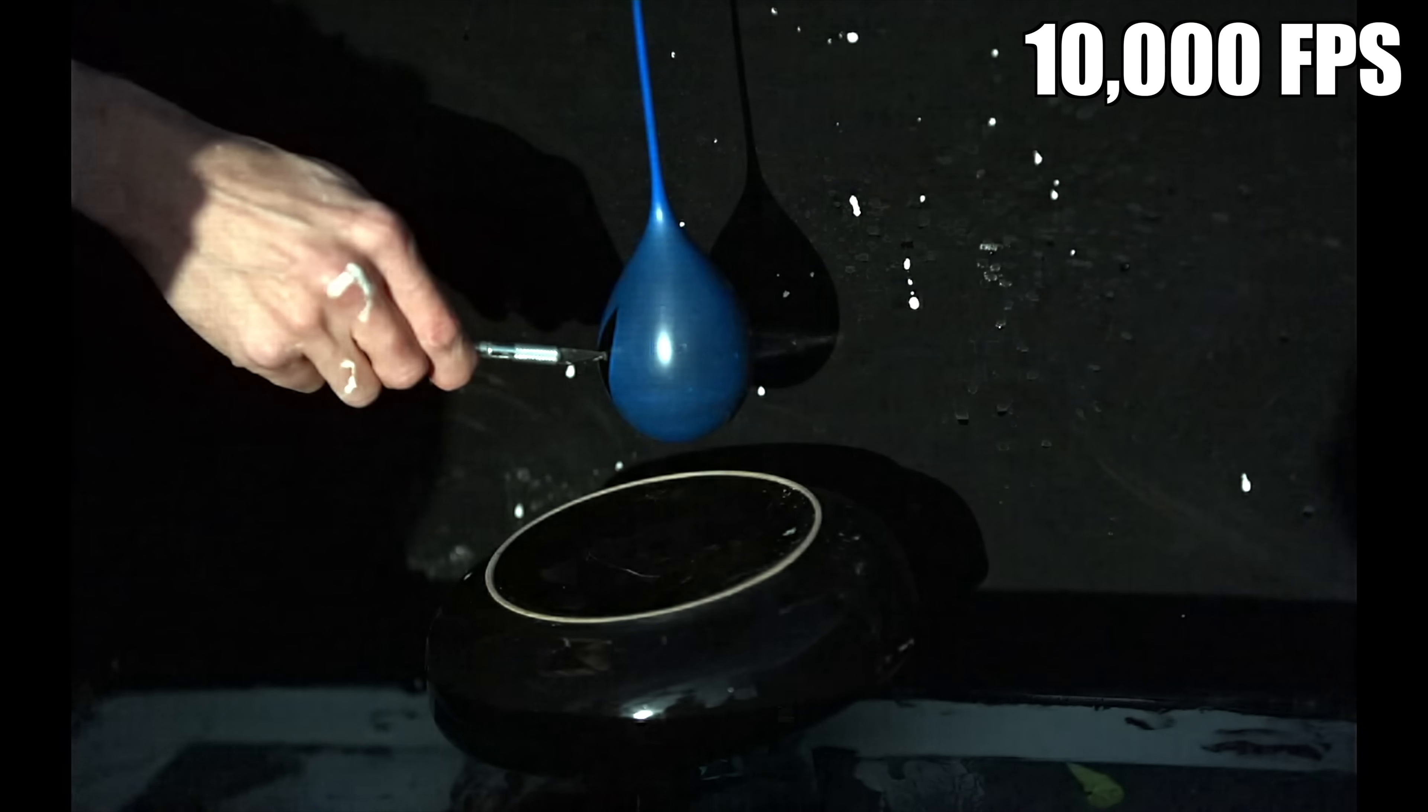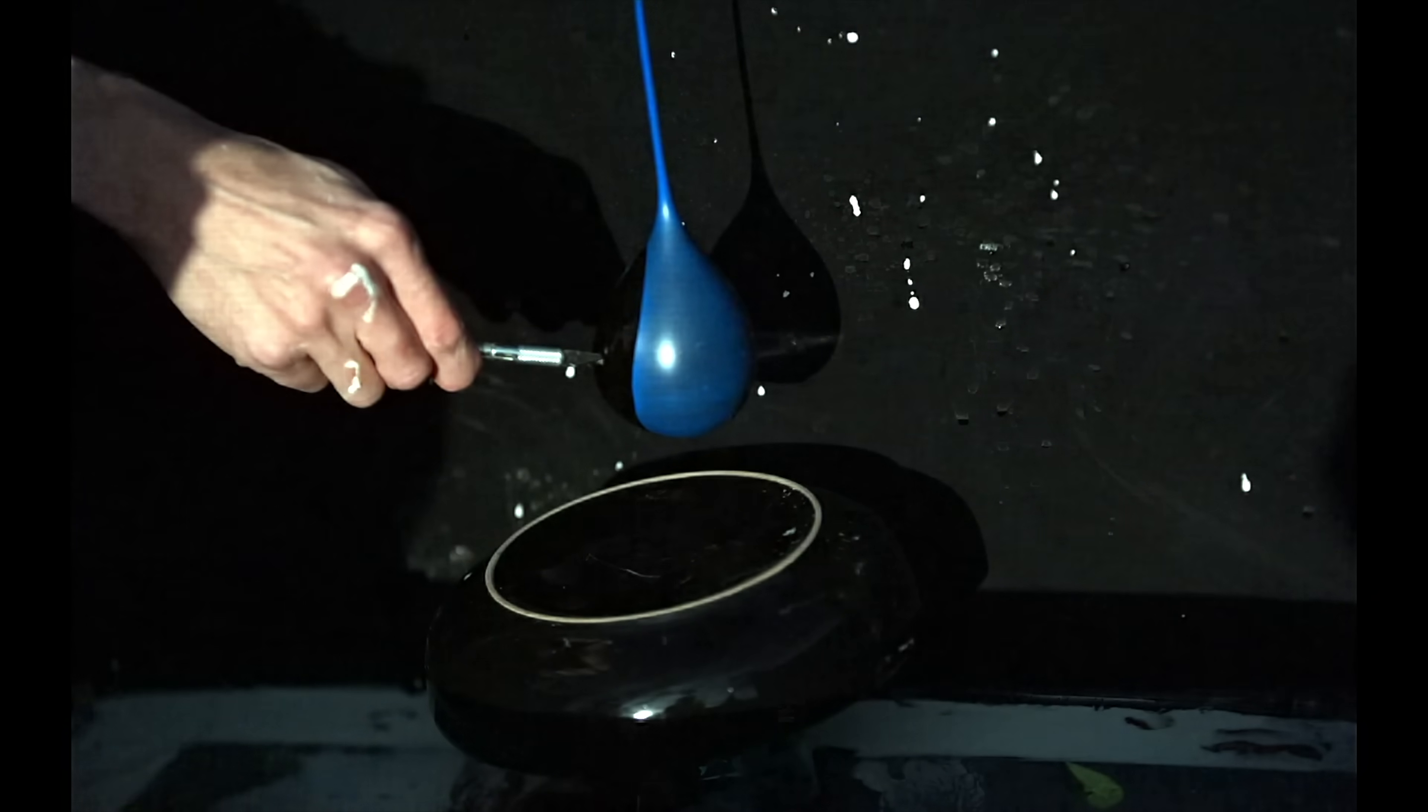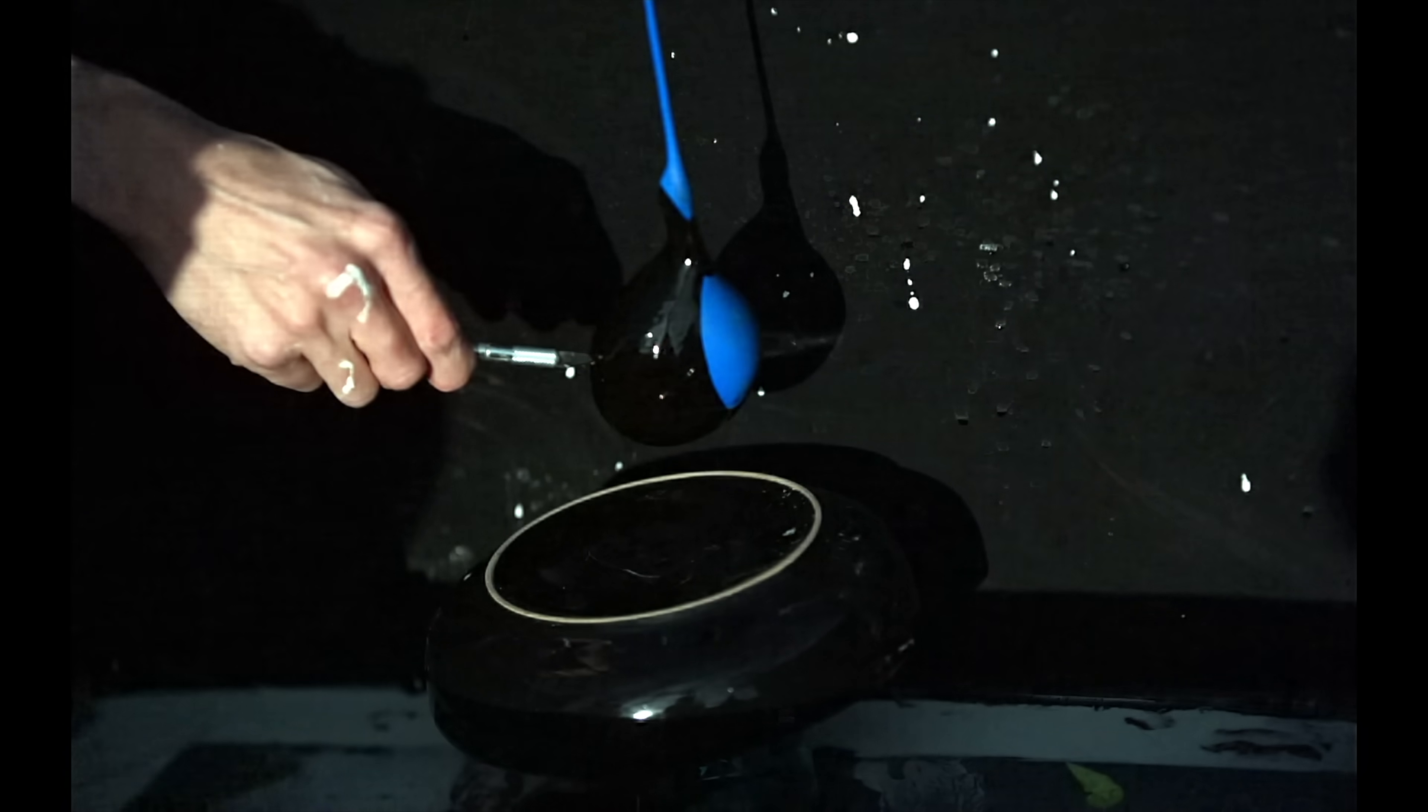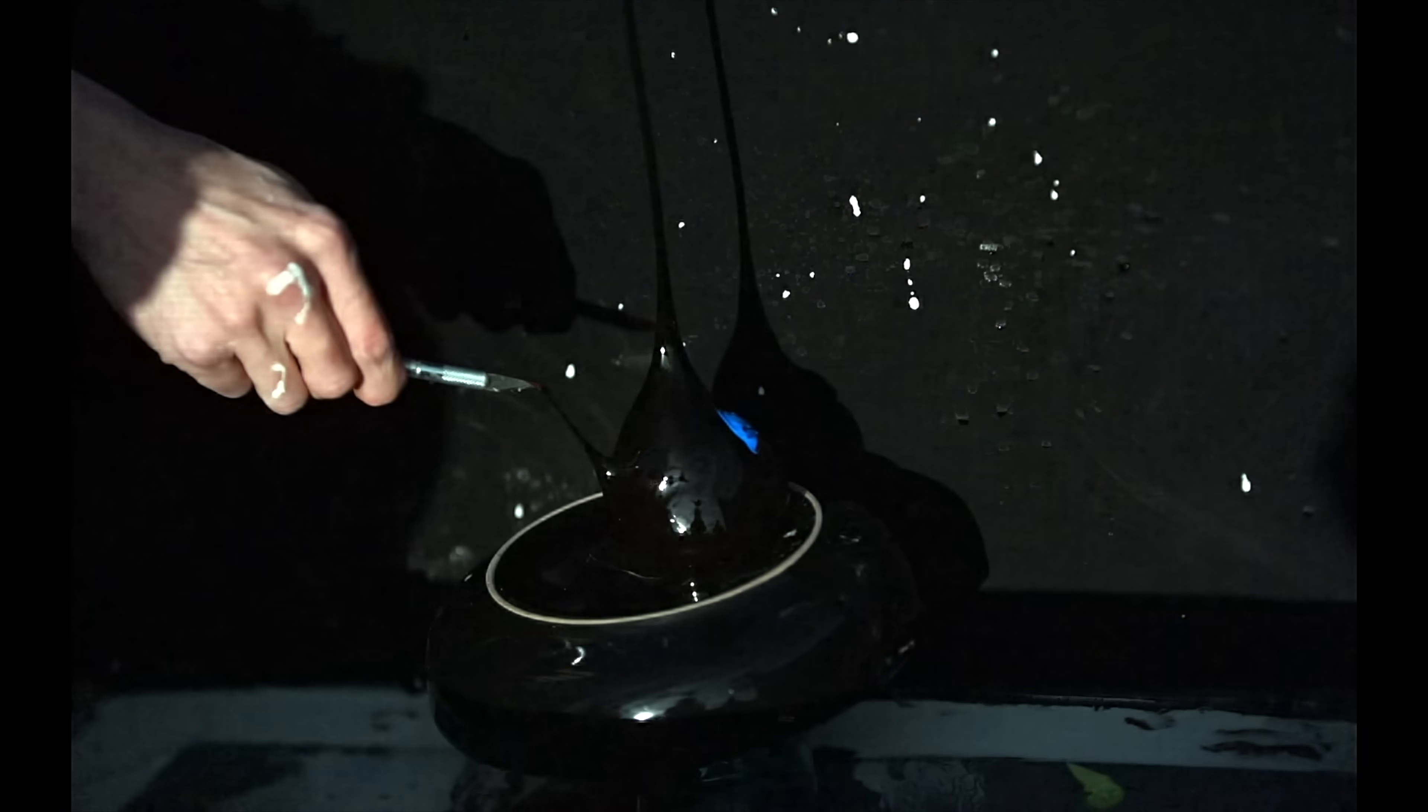Very similar to the honey, the molasses balloon is extremely slow to pull off of the molasses inside, and once the balloon pulls off, the thick liquid just falls down onto the plate.